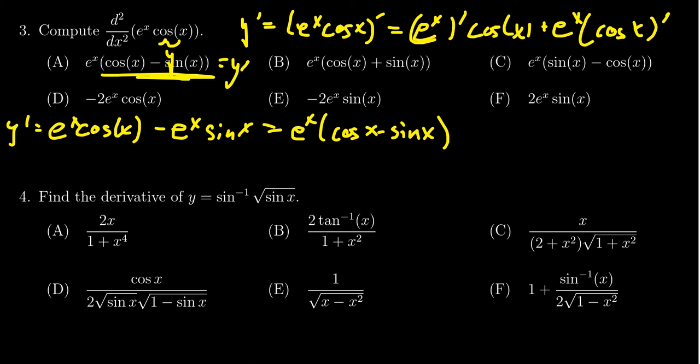So if we compute the second derivative this time, we see that the second derivative, you're going to have to use the product rule. You're going to take the derivative of e to the x, which is itself, then you times that by cosine x minus sine of x. And then you have to add to that e to the x times the derivative of cosine minus sine.